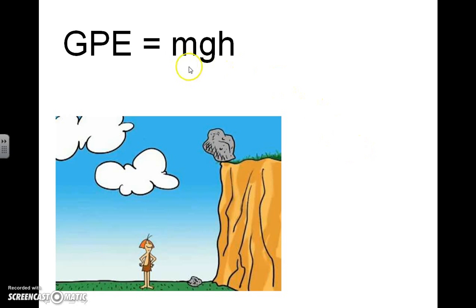So keeping in mind that the equation for any object's gravitational potential energy is its mass times the acceleration due to gravity on Earth, which is 9.8 meters per second squared, times the object's height above a frame of reference, which for us in this drawing here would be the ground.